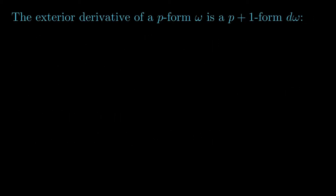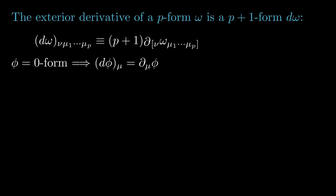If omega is a p-form, then the exterior derivative of omega is a p-plus-1 form d-omega defined as follows. For example, let phi denote a zero-form — a zero-form is just a scalar function. The exterior derivative of phi is the one-form d-phi with components d-phi-mu equals partial-mu phi. The exterior derivative of a one-form omega is a two-form d-omega with components d-omega sub mu-nu equals two times partial sub mu, omega sub mu, anti-symmetrized.